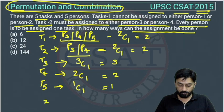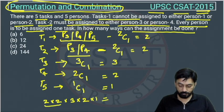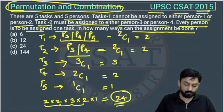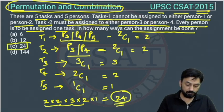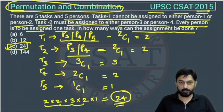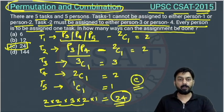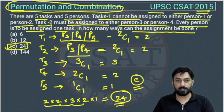The final answer will be 2 × 2 × 3 × 2 × 1. That is 4 × 3 = 12, and 12 × 2 = 24. So the answer is 24, which is option C. Option C is the correct answer for this question. I hope you all understood — if you still have some issues, you can connect with us and I will explain this question to you personally again.